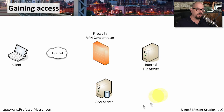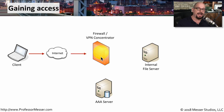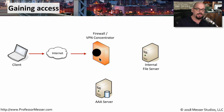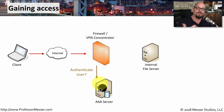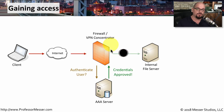This AAA framework commonly runs on a AAA server somewhere in our network. We may be a client outside our network trying to log in and gain access through a VPN tunnel. We hit the VPN concentrator, provide our username and password, and that request is passed off to the AAA server to check if the credentials are legitimate. If they are, the AAA server approves those credentials and we have access to the resources inside the network.